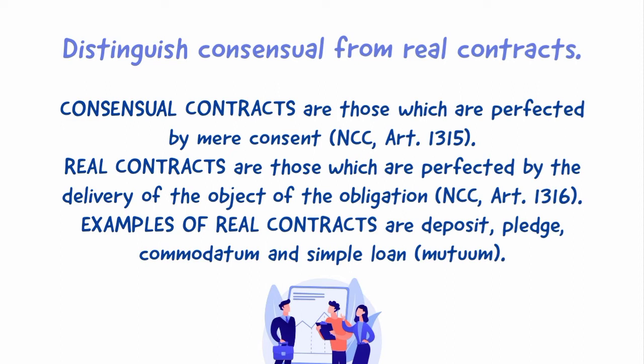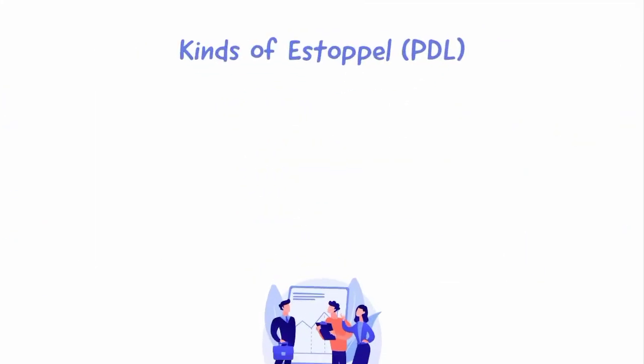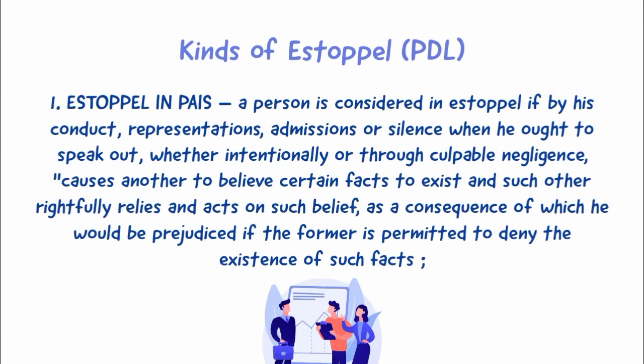Distinguish consensual from real contracts. Consensual contracts are those which are perfected by mere consent. Real contracts are those which are perfected by the delivery of the object of the obligation. Examples of real contracts are deposit, pledge, commodatum, and simple loan or mutuum.